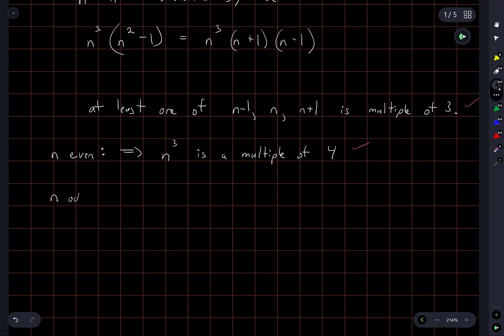And if n is odd then n plus 1 times n minus 1 is a multiple of 4. And that's because if n is odd then n plus 1 and n minus 1 are both even, and if you multiply together two numbers that are even you get a multiple of 4.